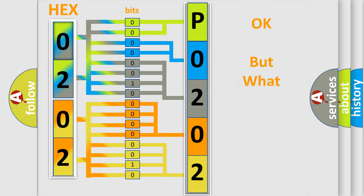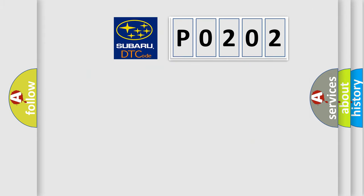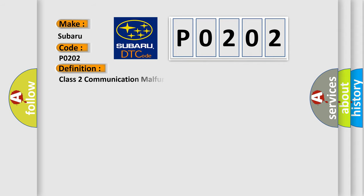The number itself does not make sense to us if we cannot assign information about what it actually expresses. So, what does the Diagnostic Trouble Code P0202 interpret specifically for Subaru car manufacturers? The basic definition is: Class 2 communication malfunction. And now here is a short description of this DTC code.